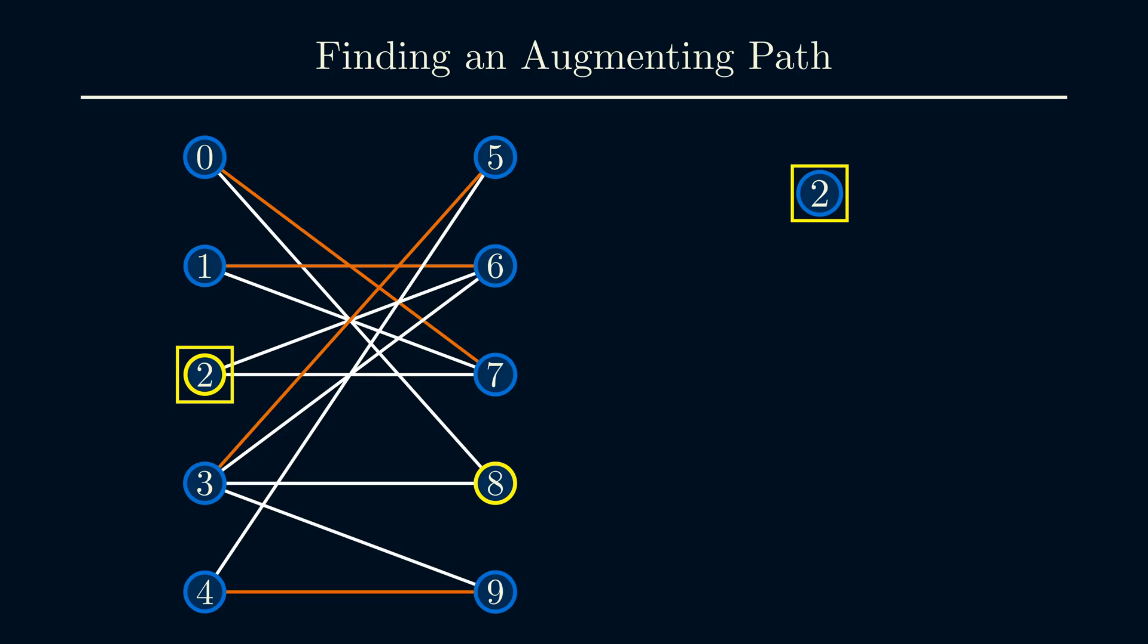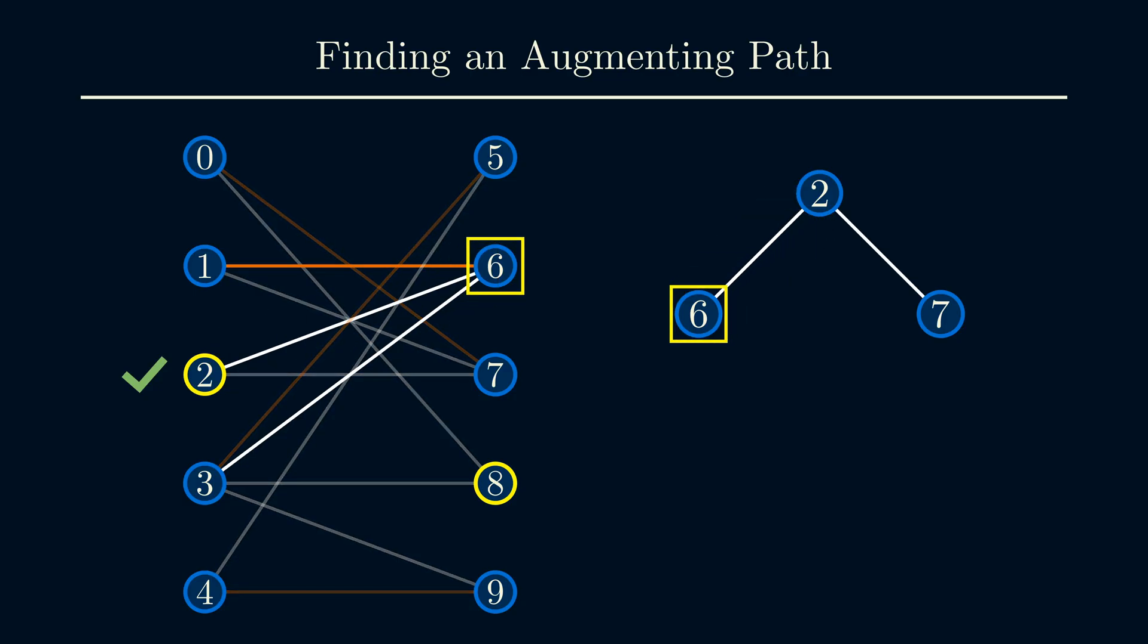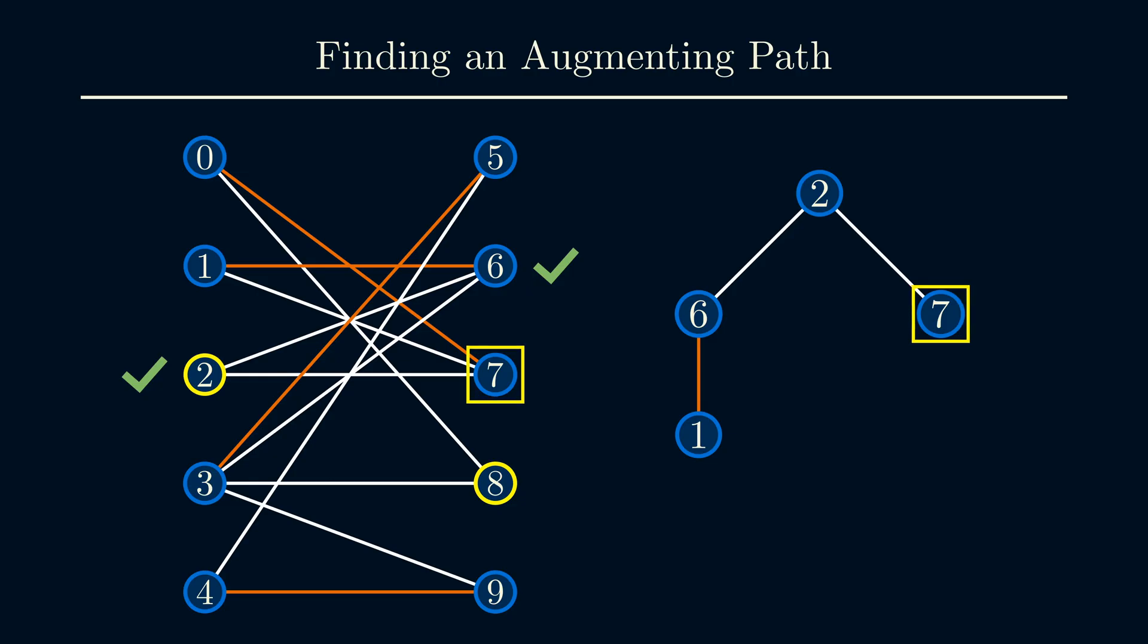All of the possible first edges in our augmenting path are the unmatched edges from vertex 2. There are two possible edges, where either 6 or 7 is the next node. We finished exploring vertex 2, so we mark it as done, and move on to one of its neighbors. Suppose 6 is the next vertex in the augmenting path. Since the second edge in an augmenting path has to be in the matching, it has to contain the edge 1, 6. Let's move to vertex 7. Here the first edge in the augmenting path we're building is 2, 7. So the second edge has to be a matched edge. Hence, 0 needs to be the next vertex.